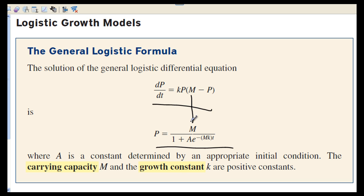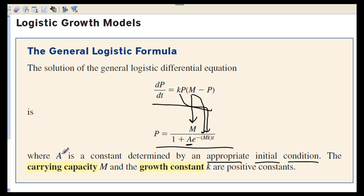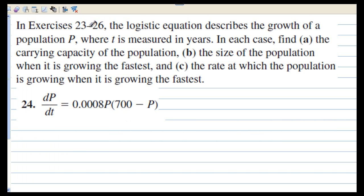This is the general logistic formula — the solution of the general logistic differential equation. Where M is the carrying capacity, M appears in the numerator and also in the exponent multiplied by K. The constant A is found by applying the appropriate initial condition. You need an initial condition to determine what A is.